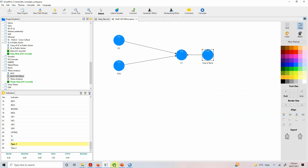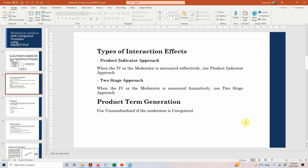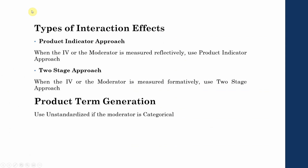Before we move on to test the model, there are a few things to note. You will see a number of options when putting a categorical variable as a moderator. For the type of interaction effect: use the product indicator approach when your IV or the moderator is measured reflectively — which is the case in this example. Use the two-stage approach when the IV or the moderator is measured formatively. Since the moderator is categorical, we are going to use unstandardized product term generation.